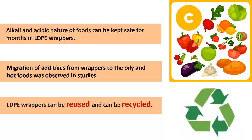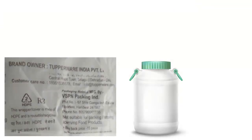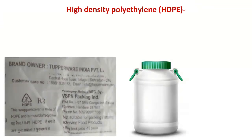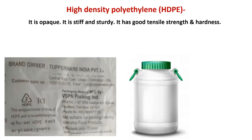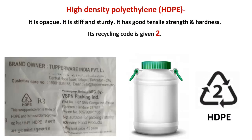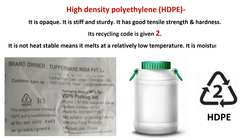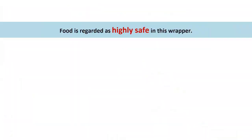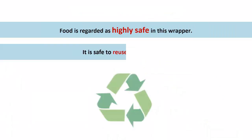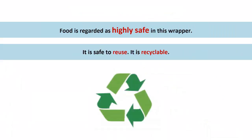High-density polyethylene (HDPE) is opaque, stiff, and sturdy. It has good tensile strength and hardness. Its recycling code is 2. It is not heat stable — it melts at a relatively low temperature. It is moisture resistant, and food is regarded as highly safe in this wrapper. It is safe to reuse and is recyclable.